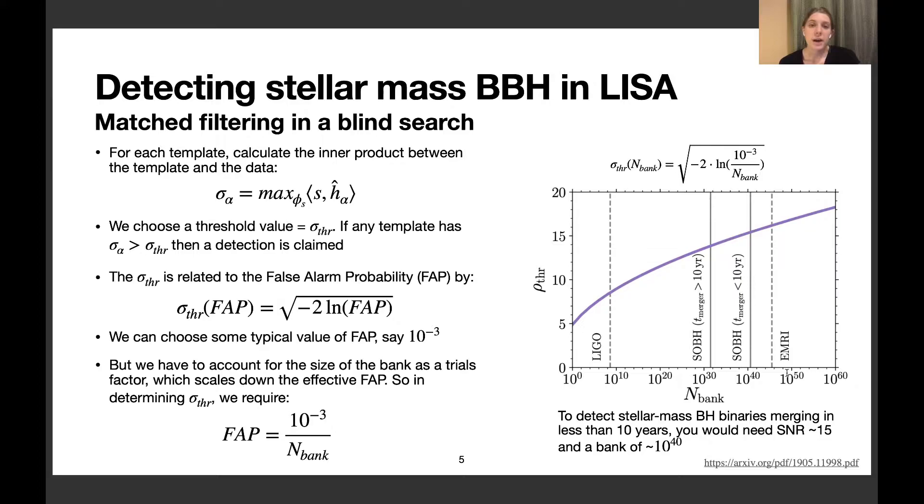Now I want to talk about the feasibility of detecting stellar mass binary black holes in LISA. First, I'll discuss how we do matched filtering searches. We use a template bank where I'm denoting the templates as H_α. For each template, we calculate the inner product or overlap with the signal S, which we call σ_α. We want to find a value of σ as a threshold above which we could claim a detection.